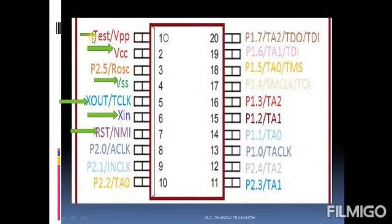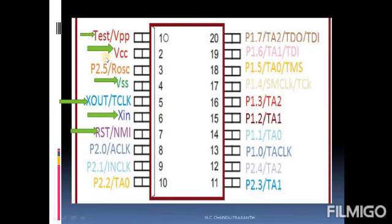It mainly consists of 20 pins. VCC is the power supply — minimum 1.8 volts. VSS is the ground. X-in means crystal oscillator input, X-out means crystal oscillator output. NMI is the non-maskable interrupt — an interrupt is an event which halts normal program execution. The remaining 14 pins are general-purpose input output (GPIO) pins.